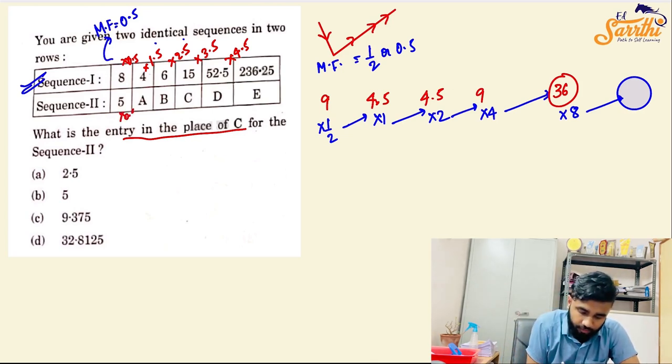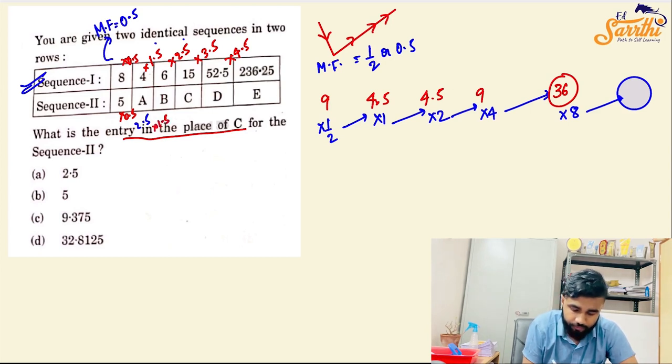5 into 0.5. What is the value of 5? That is 2.5. A value is 2.5. 2.5 into 1.5. What will happen next? That is simply 3.75. 3.75 into 2.5. That is the value of C, which is equal to option number C. That is 9.375. This is 3.75 into the multiplying factor. That is 2.5.